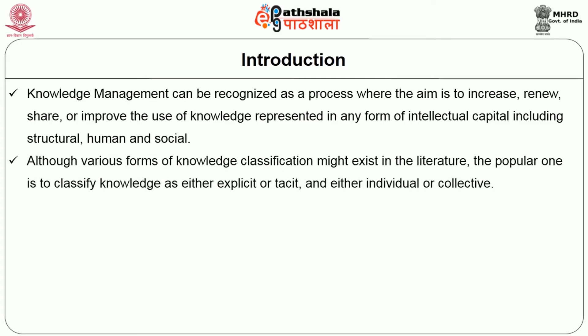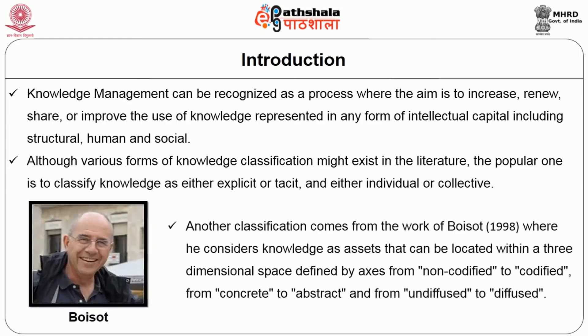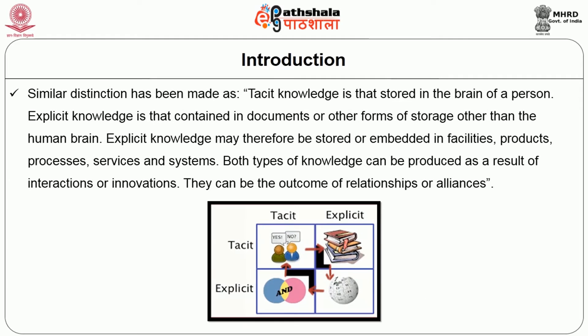Although various forms of knowledge classification might exist in the literature, the popular one is to classify knowledge as either explicit or tacit and either individual or collective. Another classification comes from the work of Boisot in 1998, where he considers knowledge as an asset that can be located within a three-dimensional space defined by axes from non-codified to codified, from concrete to abstract, and from undiffused to diffused. Similarly, tacit knowledge is that stored in the brain of a person, while explicit knowledge is that contained in documents or other forms of storage other than the human brain.